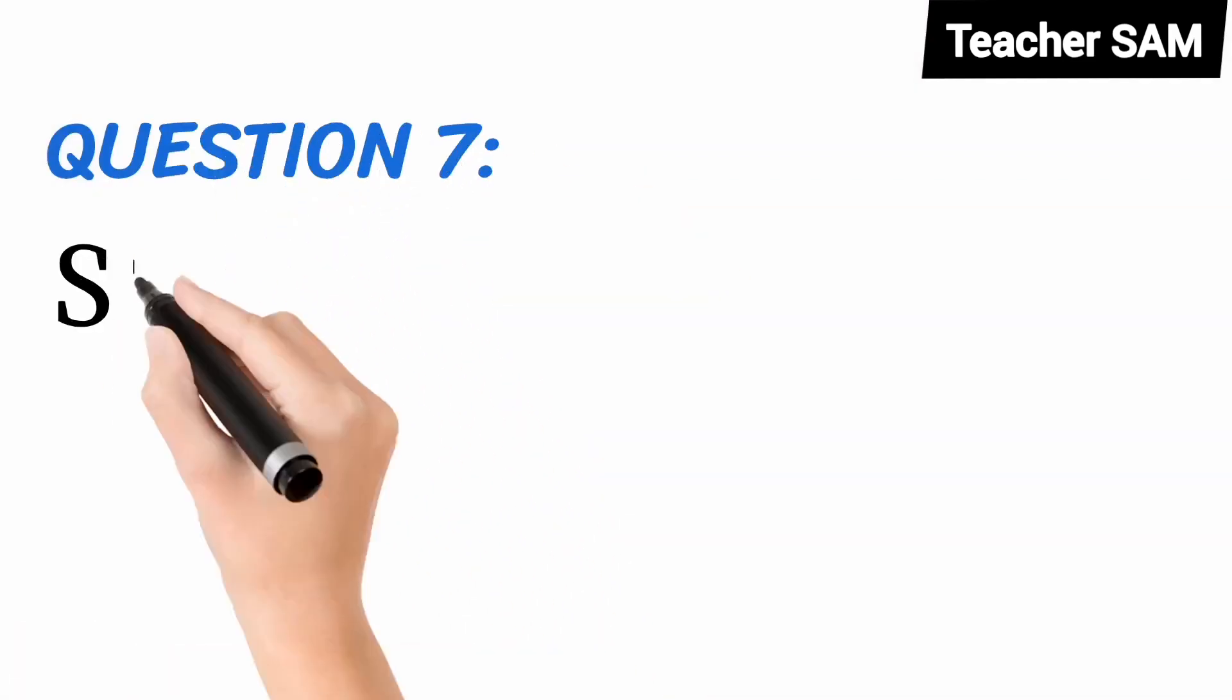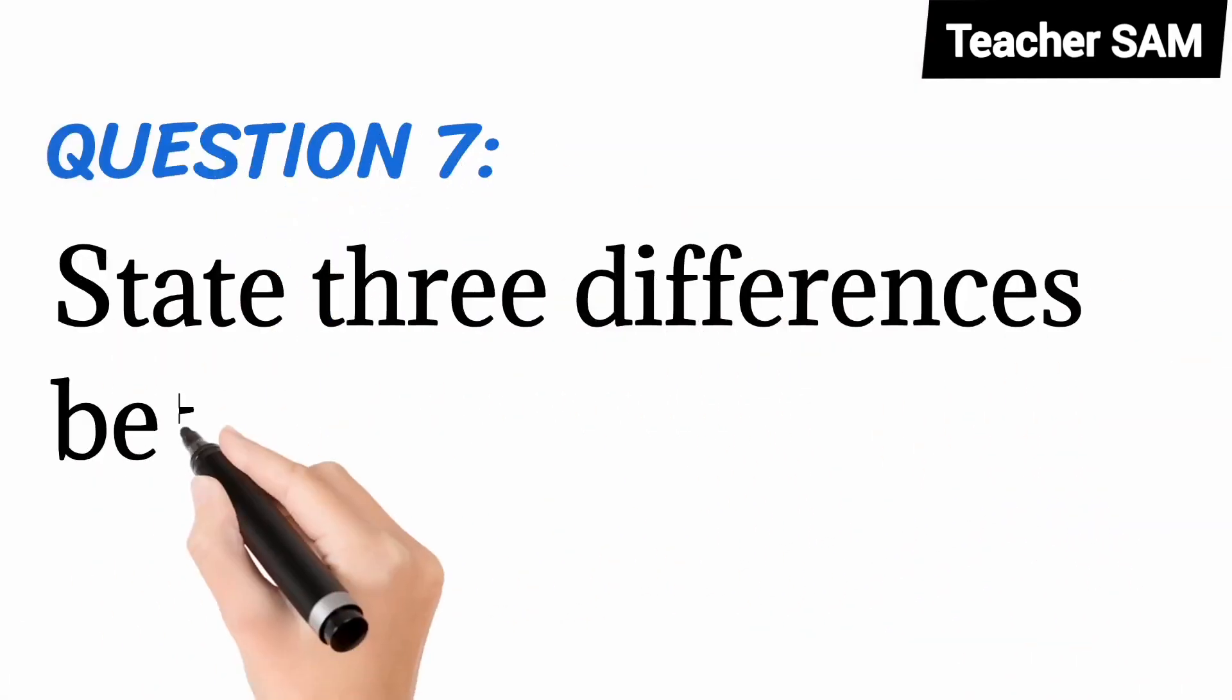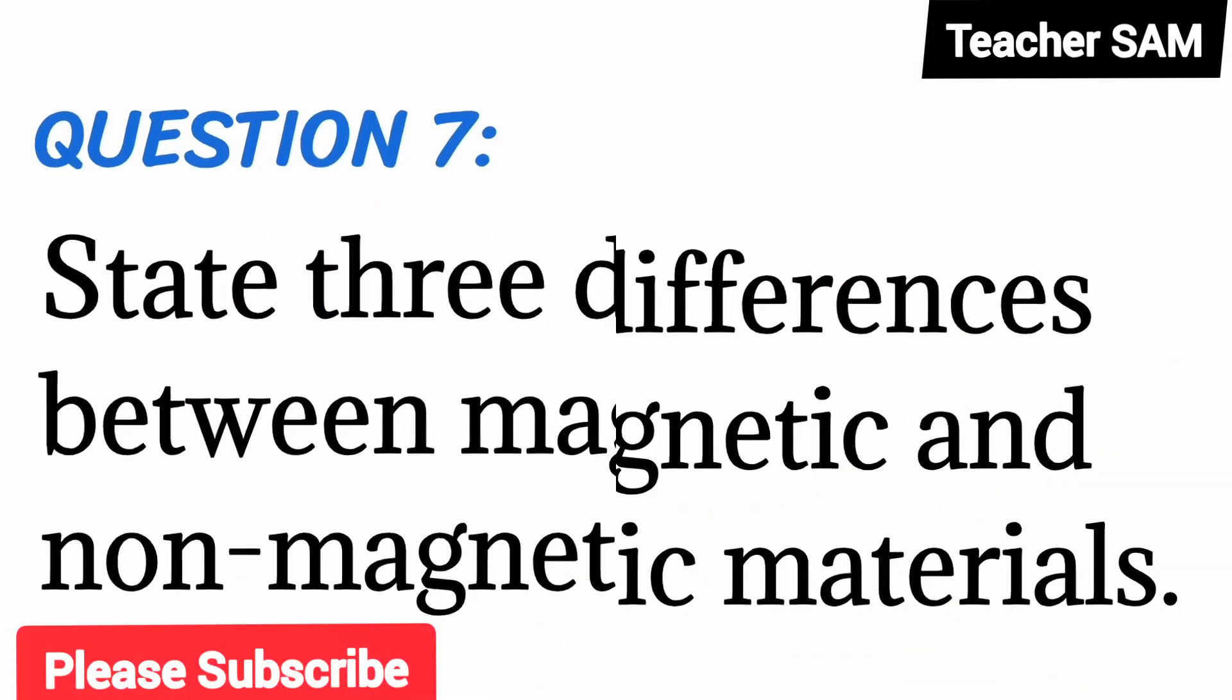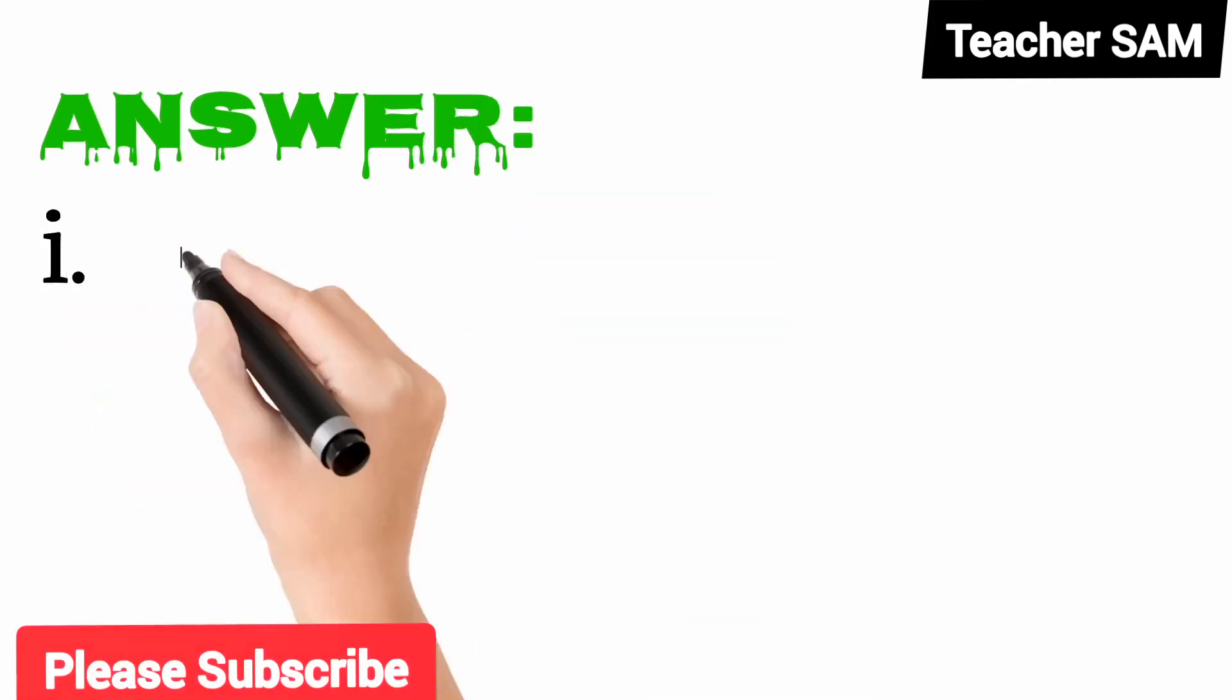Question 7. State three differences between magnetic and non-magnetic materials. Answer: 1.